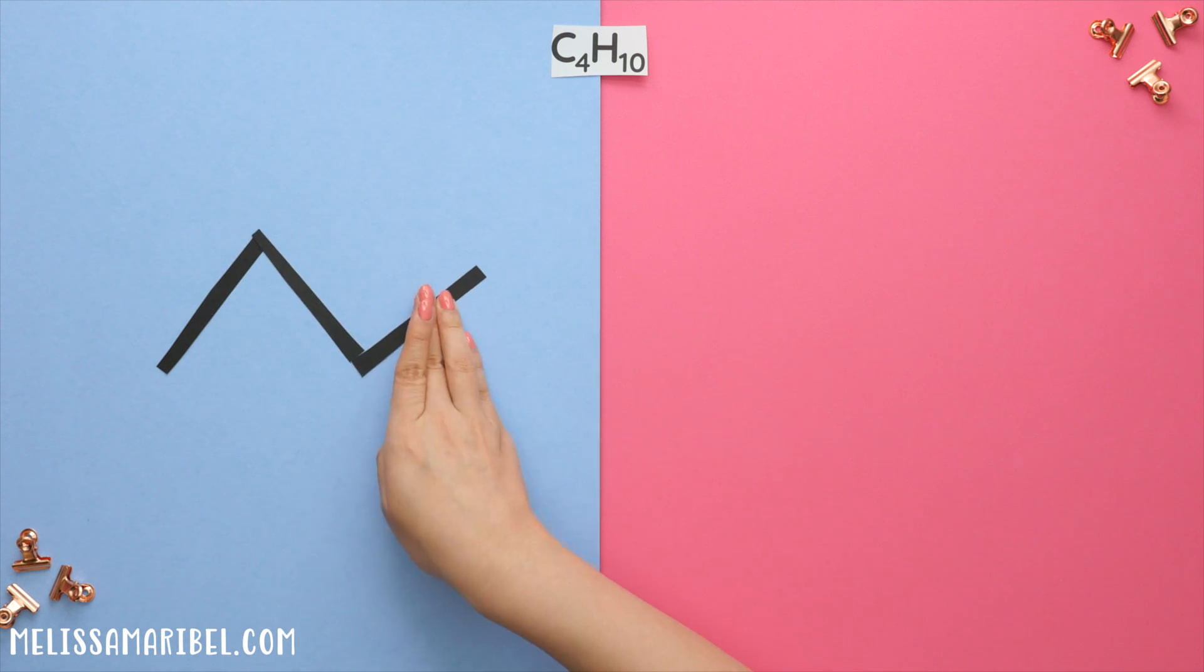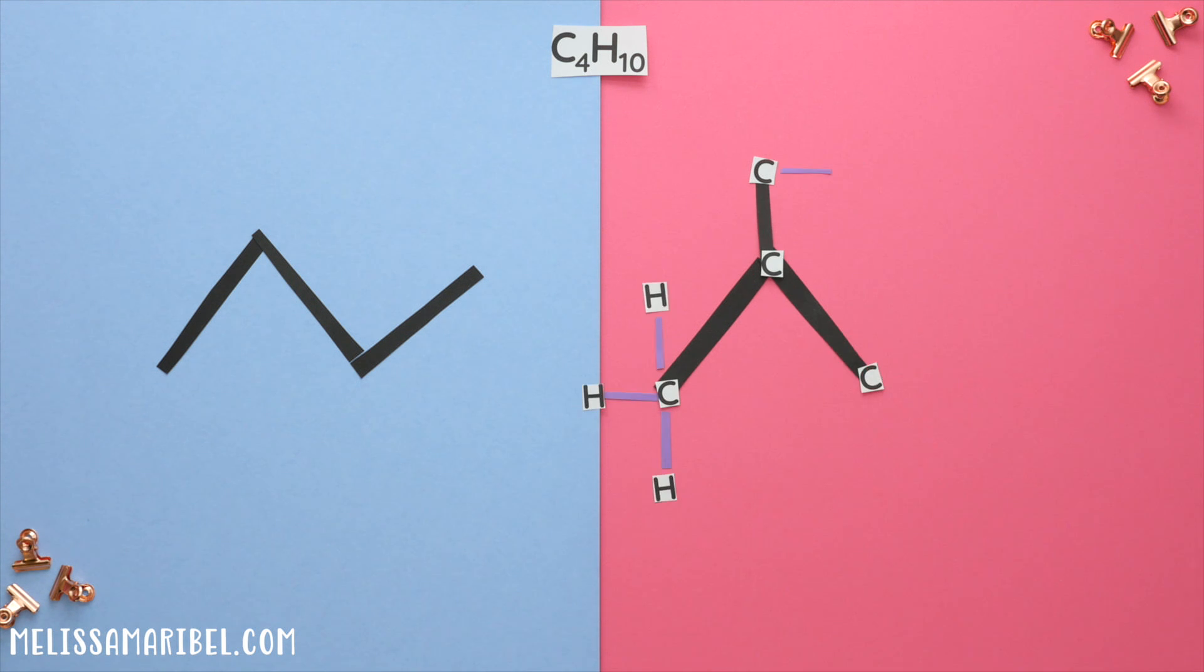So let's check if this has 4 carbons and 10 hydrogens. Each point is a carbon, and we will place all the hydrogens in this structure. Remember carbon can make 4 bonds, so this carbon has 1 bond here and 3 hydrogens. Same goes for this top carbon and the carbon to the right. The center carbon has 3 bonds, so it needs a hydrogen here. We have 1, 2, 3, 4 carbons and 1, 2, 3, 4, 5, 6, 7, 8, 9, 10 hydrogens.